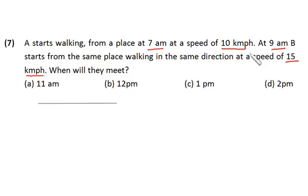That means before B starts, A might have run for 2 hours, and his speed is 10 km per hour. That means in 2 hours he might have run for 20 kilometers. Suppose it is 9 a.m.